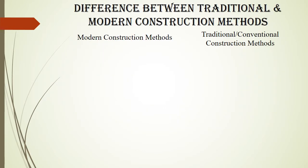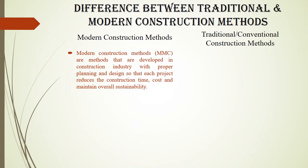Now, the difference between traditional and modern construction methods. Modern construction methods are methods developed in the construction industry with proper planning and design so that each project reduces the construction time, cost, and maintains overall sustainability of the project.